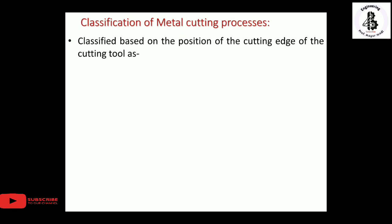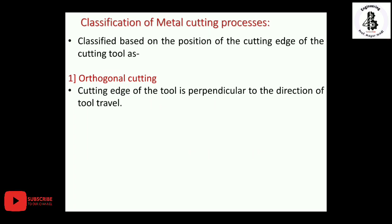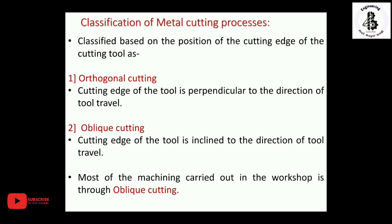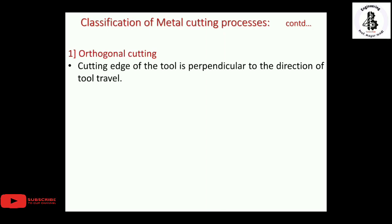Classification of metal cutting processes is generally based on the position of the cutting edge of the cutting tool. In orthogonal cutting, the cutting edge of the tool is perpendicular to the direction of tool travel. In oblique cutting, the cutting edge is inclined to the direction of tool travel. Most machining carried out in workshops is oblique cutting, because it reduces cutting force, increases tool life, and optimizes the cutting process.